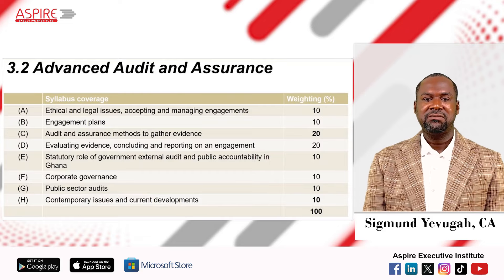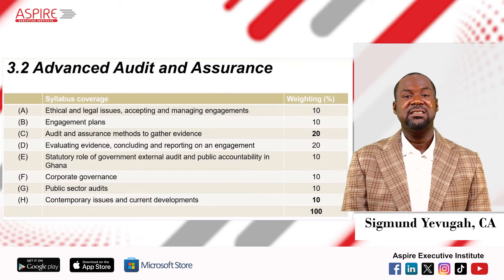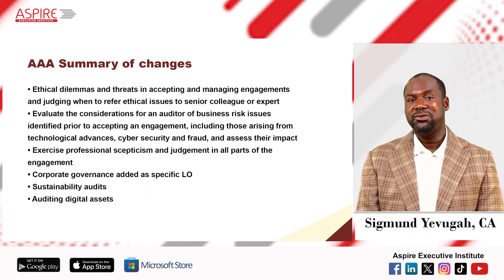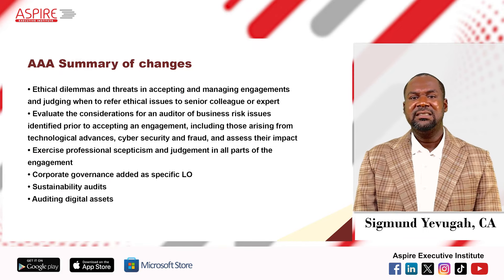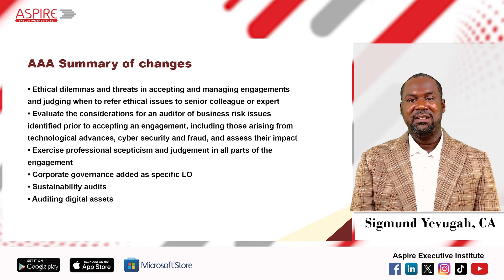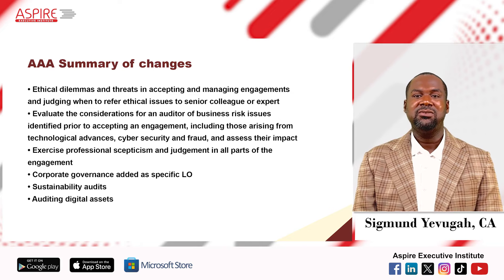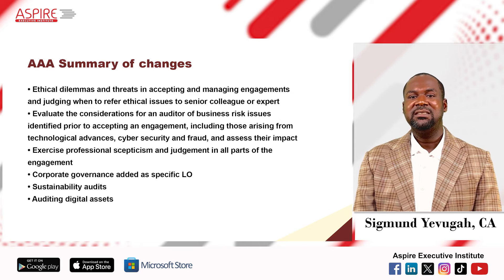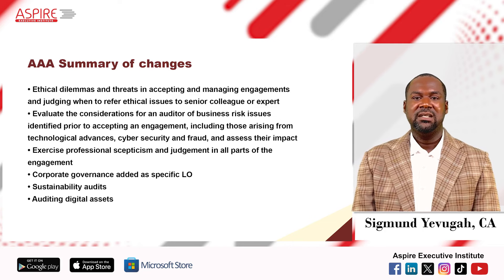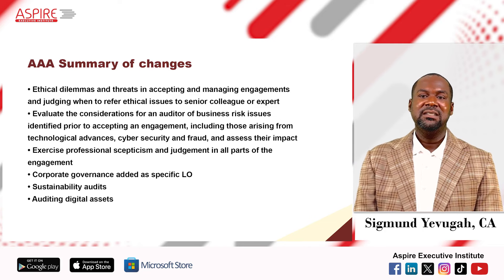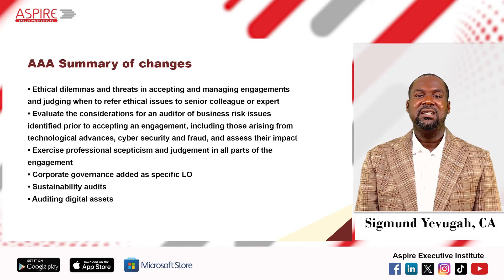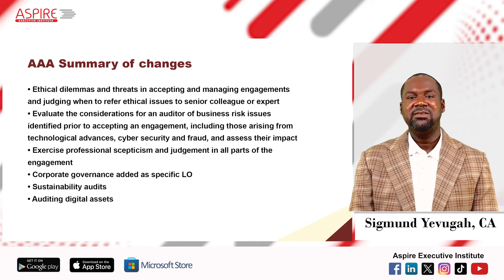I want to now take you to the major changes we have seen in this new syllabus regarding Paper 3.2 Advanced Audit and Assurance. Ethics is now a major issue — ethical dilemmas and how to resolve them. There is also emphasis on applying professional skepticism. Students need to understand how to evaluate articulation for an auditor in terms of business risk, and the need to evaluate business risk has been emphasized in this syllabus.